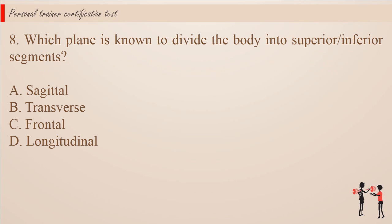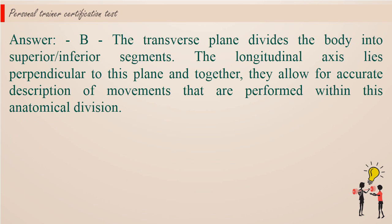Question 8. Which plane is known to divide the body into superior and inferior segments? a. Sagittal. b. Transverse. c. Frontal. d. Longitudinal. Answer: b. The transverse plane divides the body into superior and inferior segments. The longitudinal axis lies perpendicular to this plane and together they allow for accurate description of movements performed within this anatomical division.